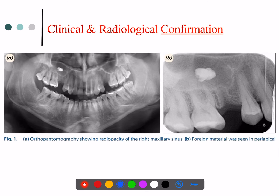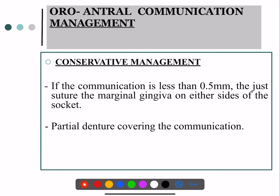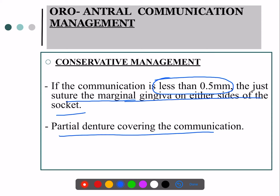Radiographically, you can see a foreign body in the maxillary sinus — for example, in the maxillary first molar area. Regarding treatment: when the communication is less than 0.5 millimeters, simply suture the marginal gingiva on either side of the socket and protect the area by providing a partial denture.